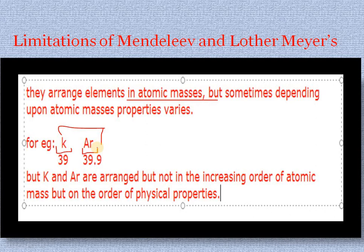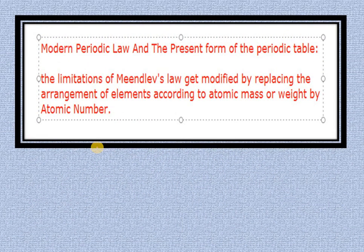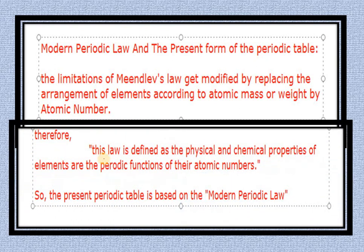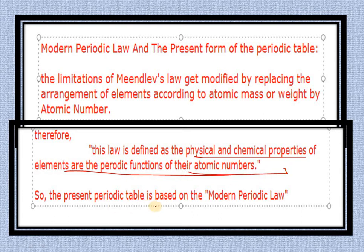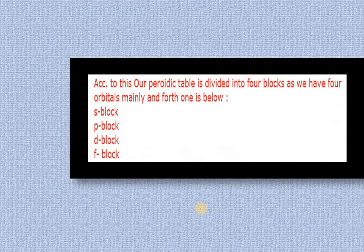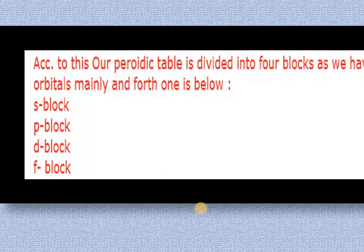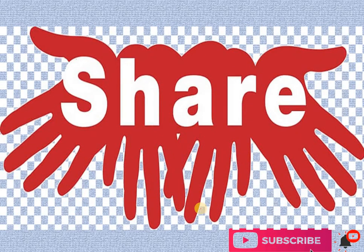This limitation led us to the Modern Periodic Law and the present long form of the periodic table. To resolve this, elements were arranged by atomic number instead of atomic mass. The Modern Periodic Law states that the physical and chemical properties of elements are a periodic function of their atomic numbers. This periodic table is based on the modern periodic law, and elements are divided into blocks — s-block, p-block, d-block, and f-block.